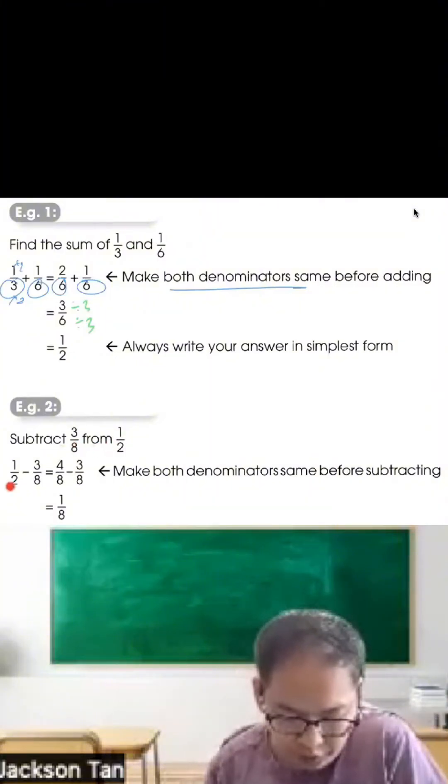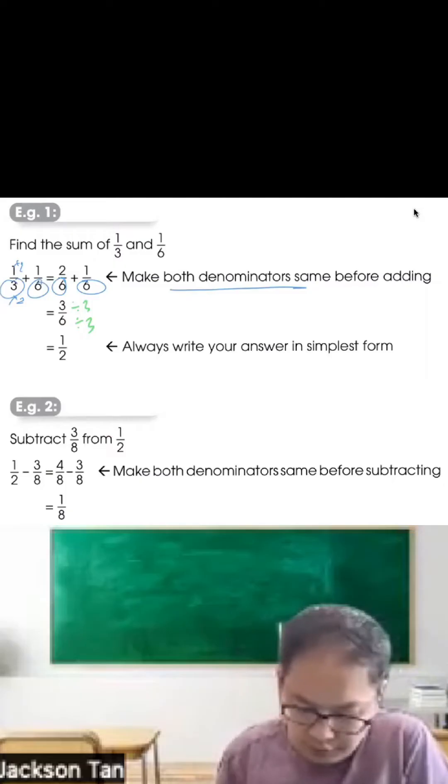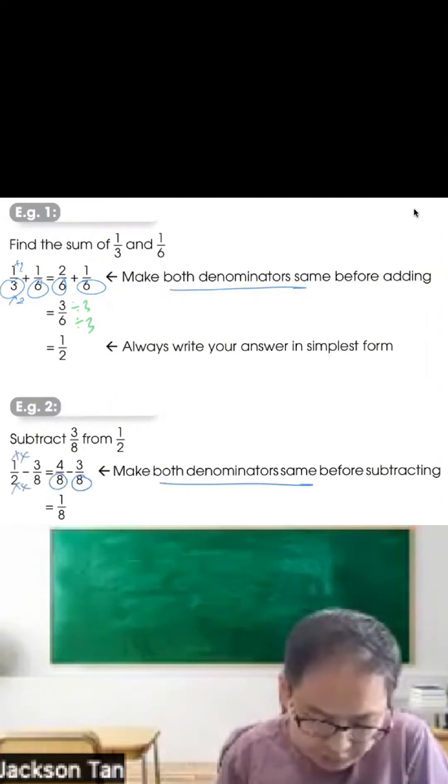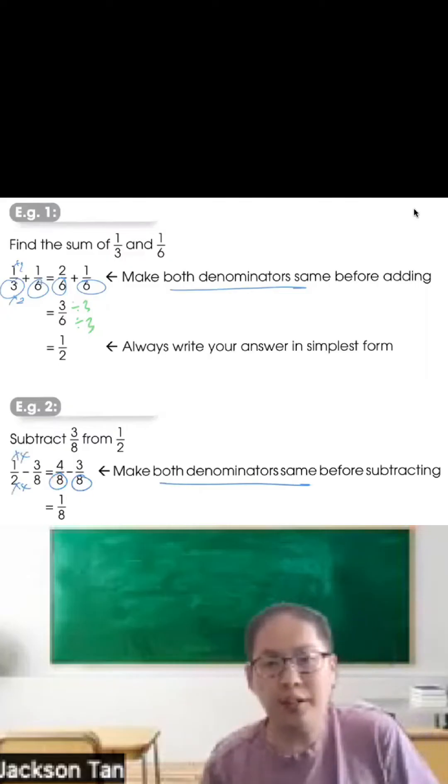Subtract 3 out of 8 from 1 out of 2. So 1 out of 2 minus 3 out of 8. Same, always make denominator same. So to get 8, here you times 4, times 4. So you get 4 out of 8 minus 3 out of 8. That's 1 out of 8.